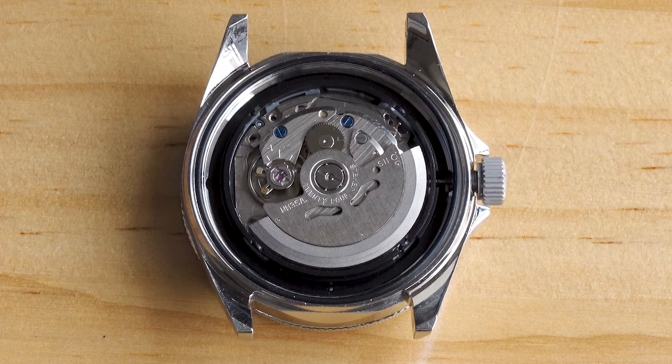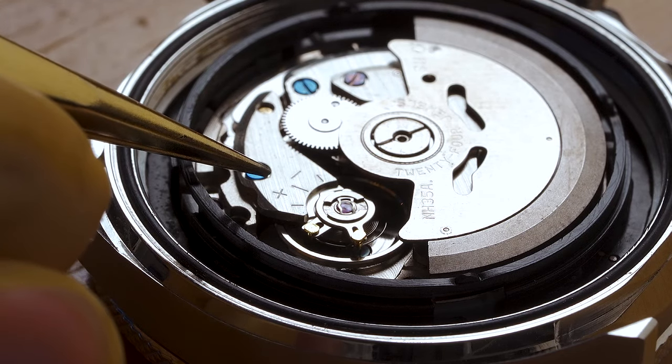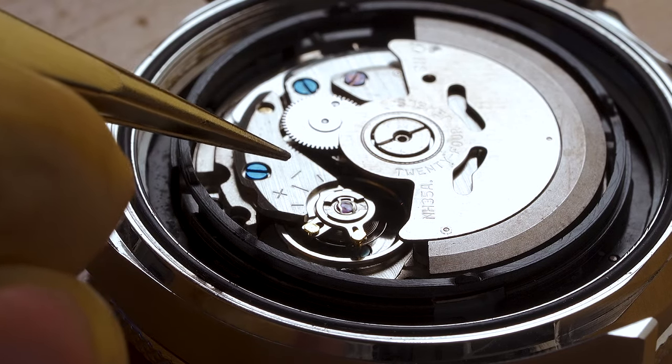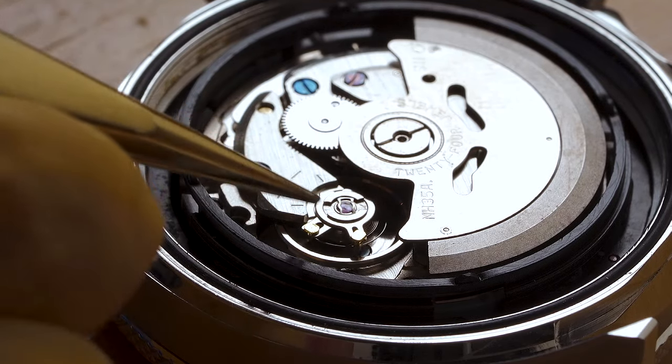There is usually a mark on the balance bridge that tells us which way we should push the regulator to speed up or slow down the watch. So for this particular movement, turning the regulator anti-clockwise will speed up the watch and vice versa.